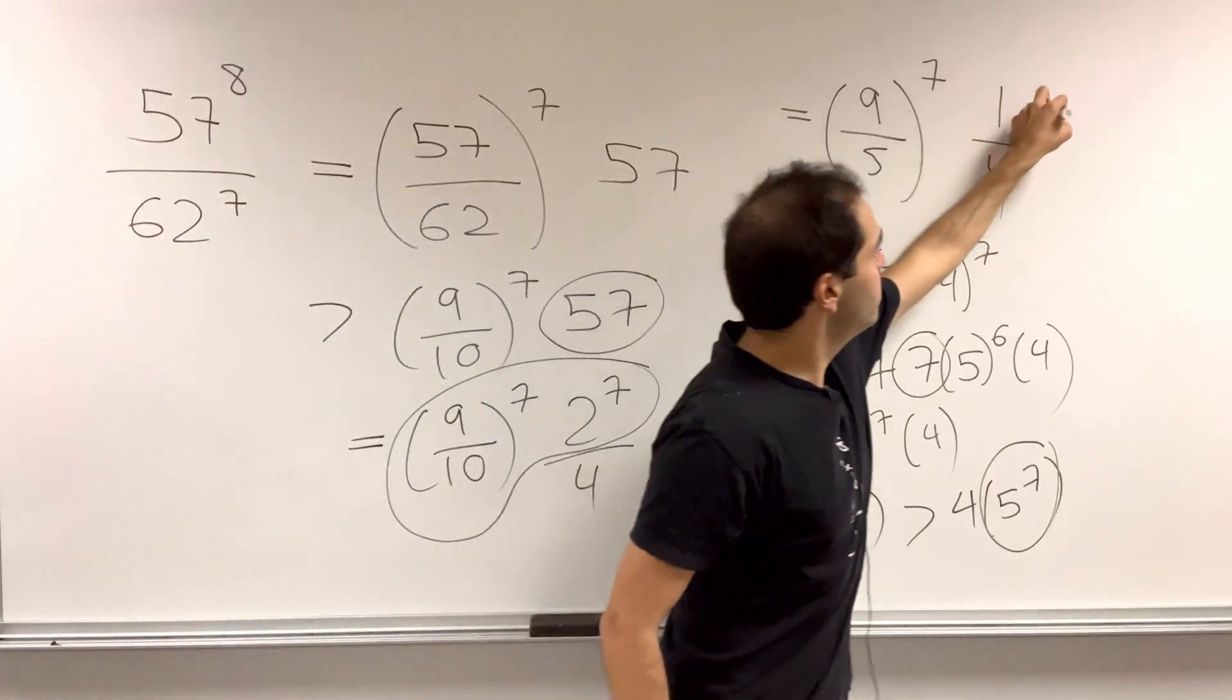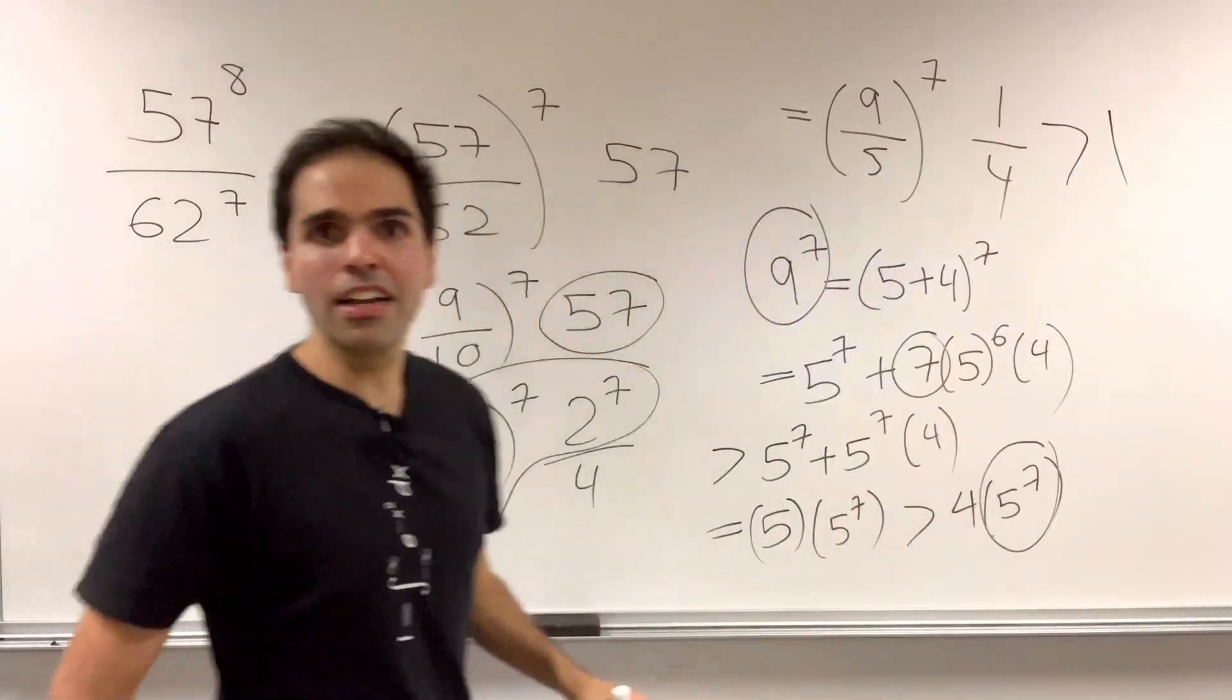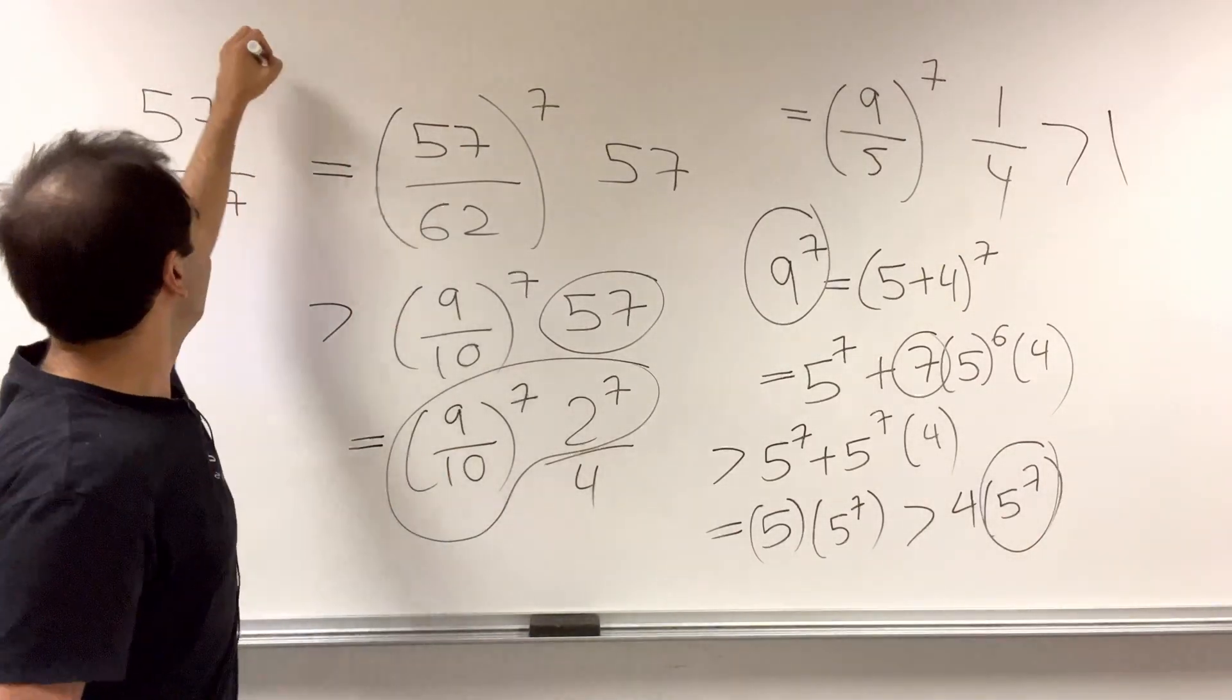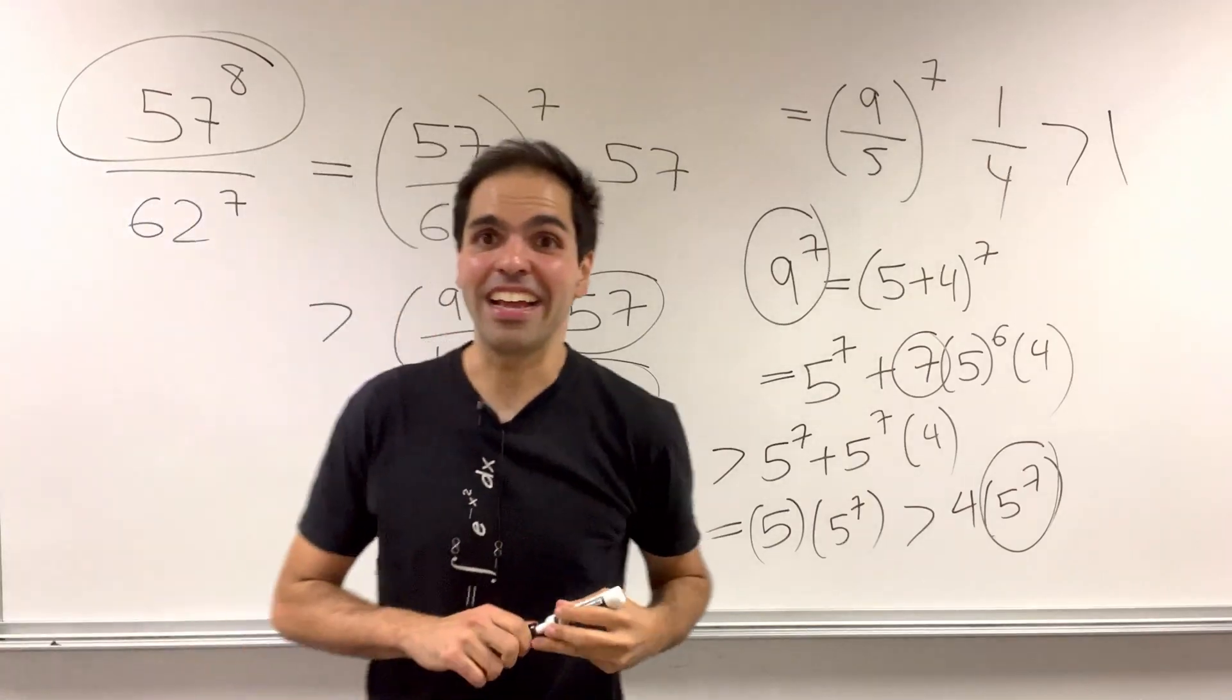So this ratio is bigger than 1, and therefore, in the end, who is the winner of the chicken dinner? It's 57 to the 8th.